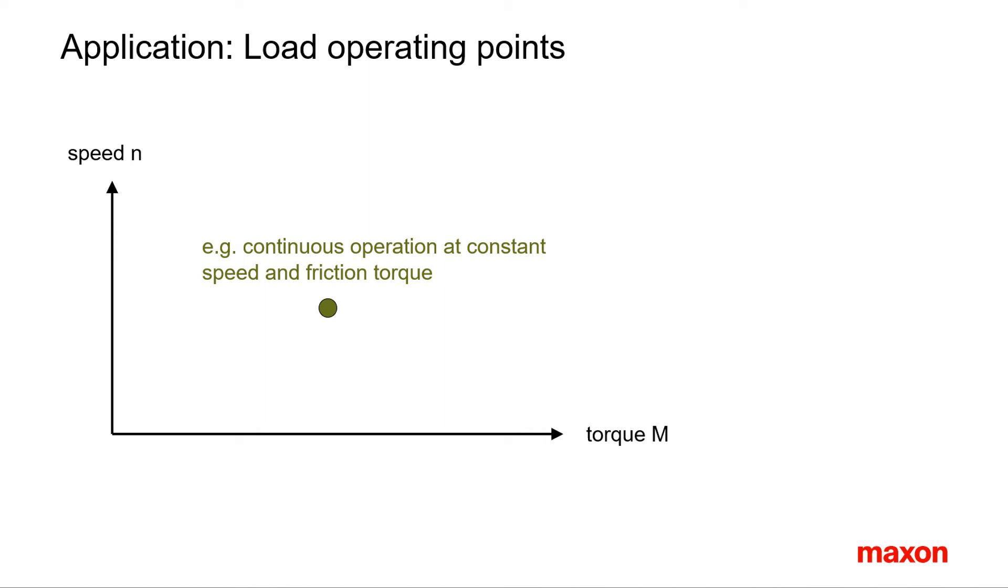The starting point for motor selection is the motion of the load in the application. The necessary operation cycles, speed profiles and friction result in speed and torque requirements the motor has to fulfill.